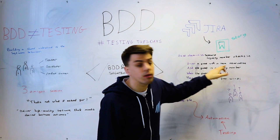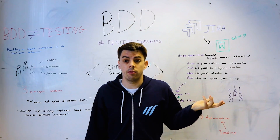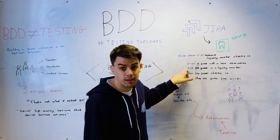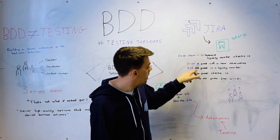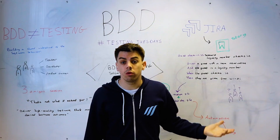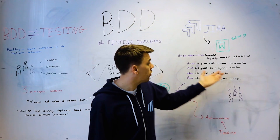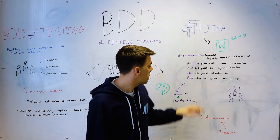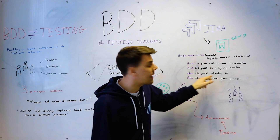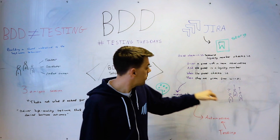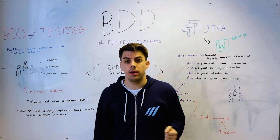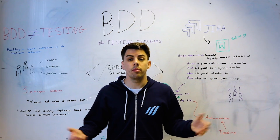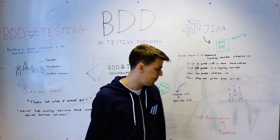Given: a guest has a room reservation — simple enough, they have a reservation. The second syntax: the guest is a loyalty member, because we're talking about loyalty members in our scenario. When the guest checks in, then they are given free Wi-Fi. It's standard in our hotel that loyalty members get free Wi-Fi.